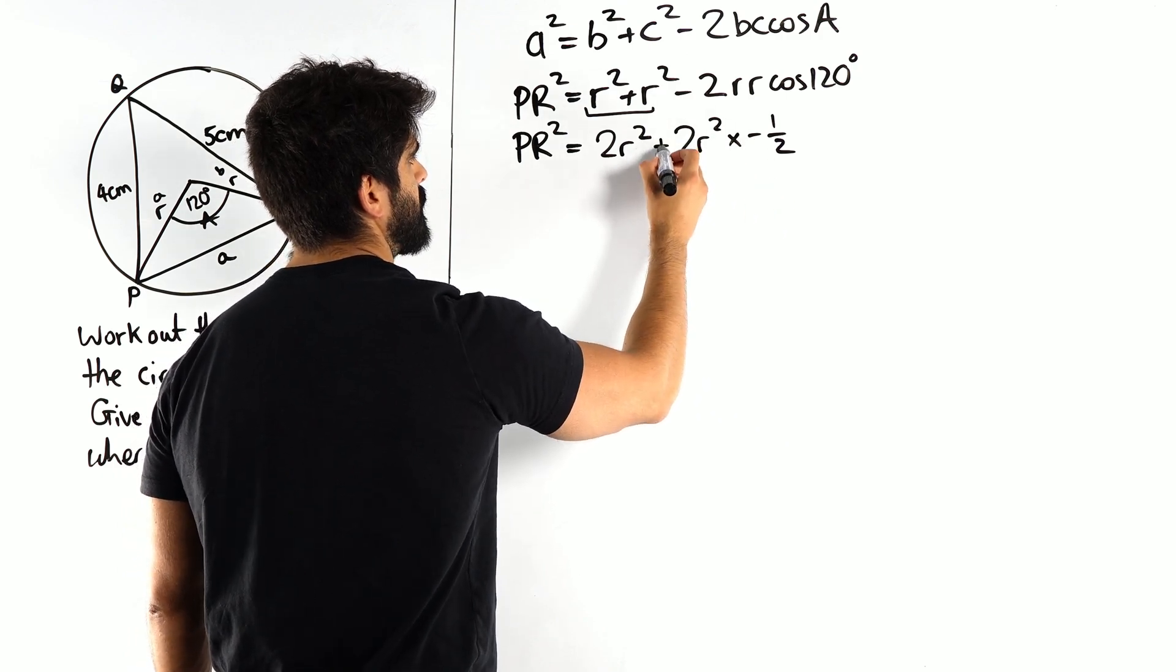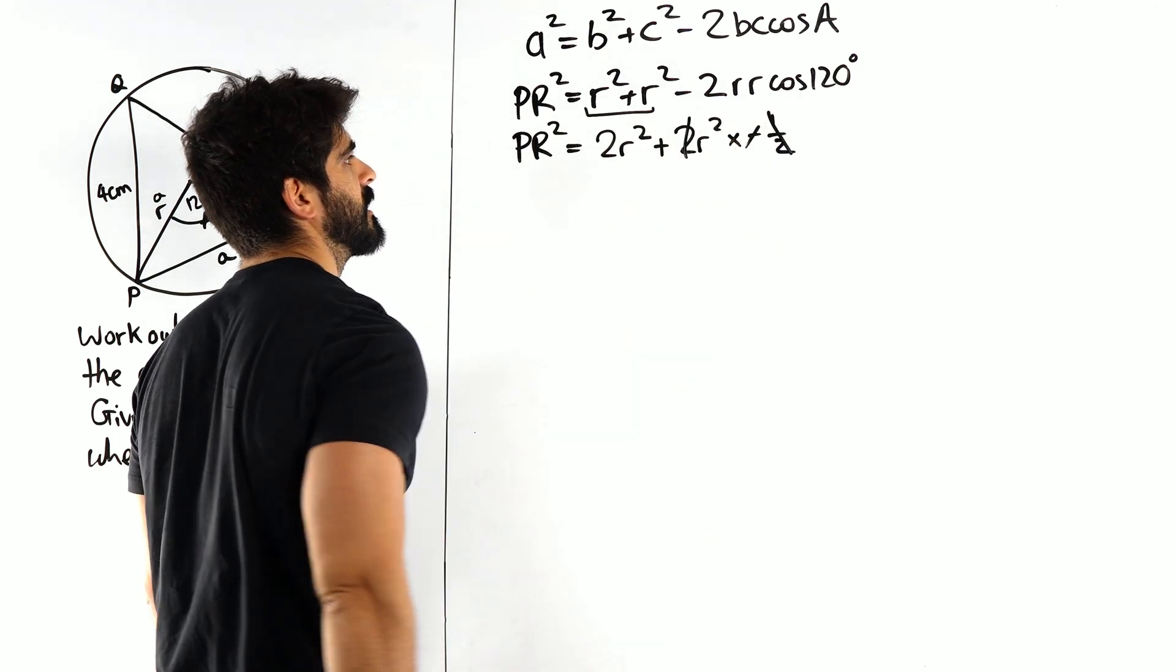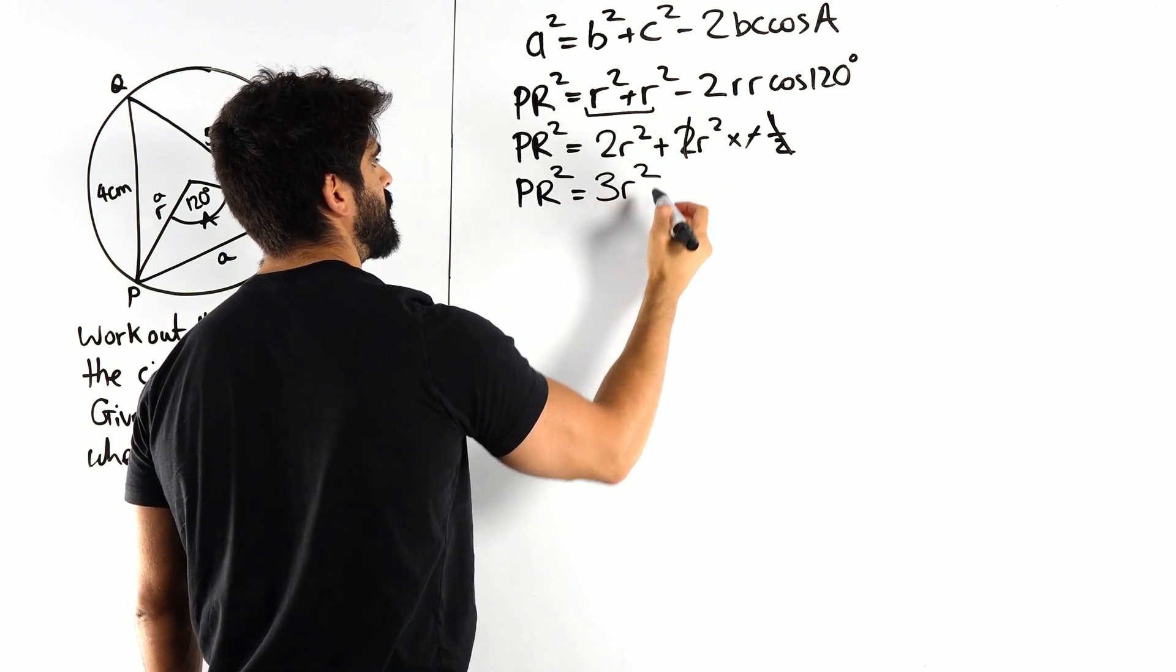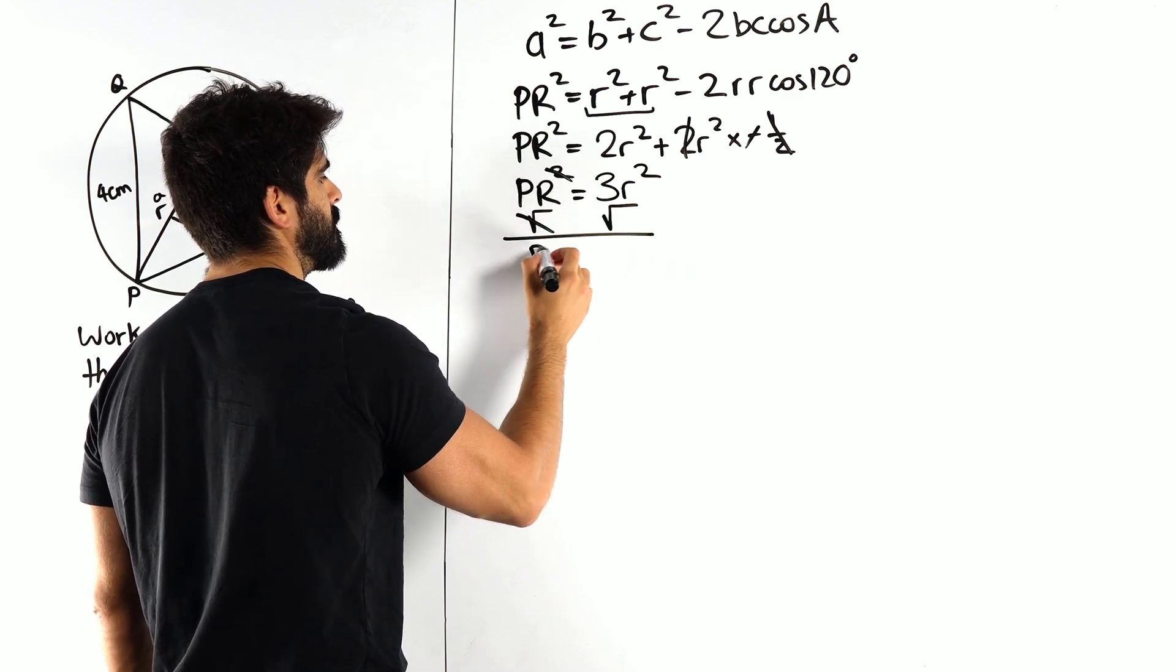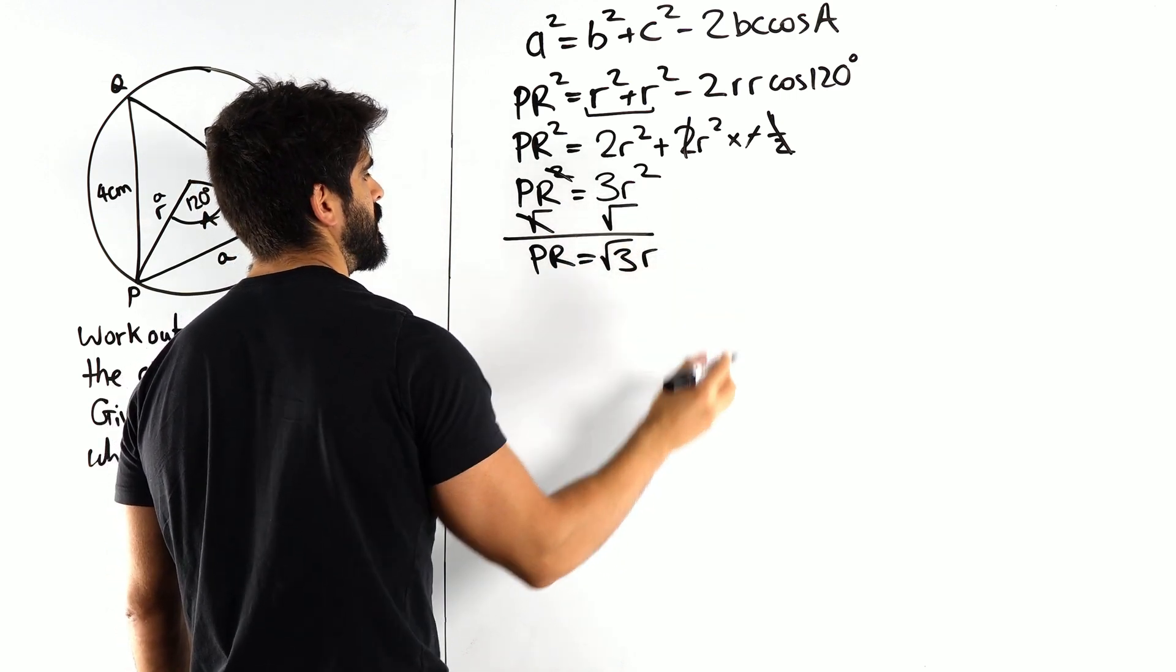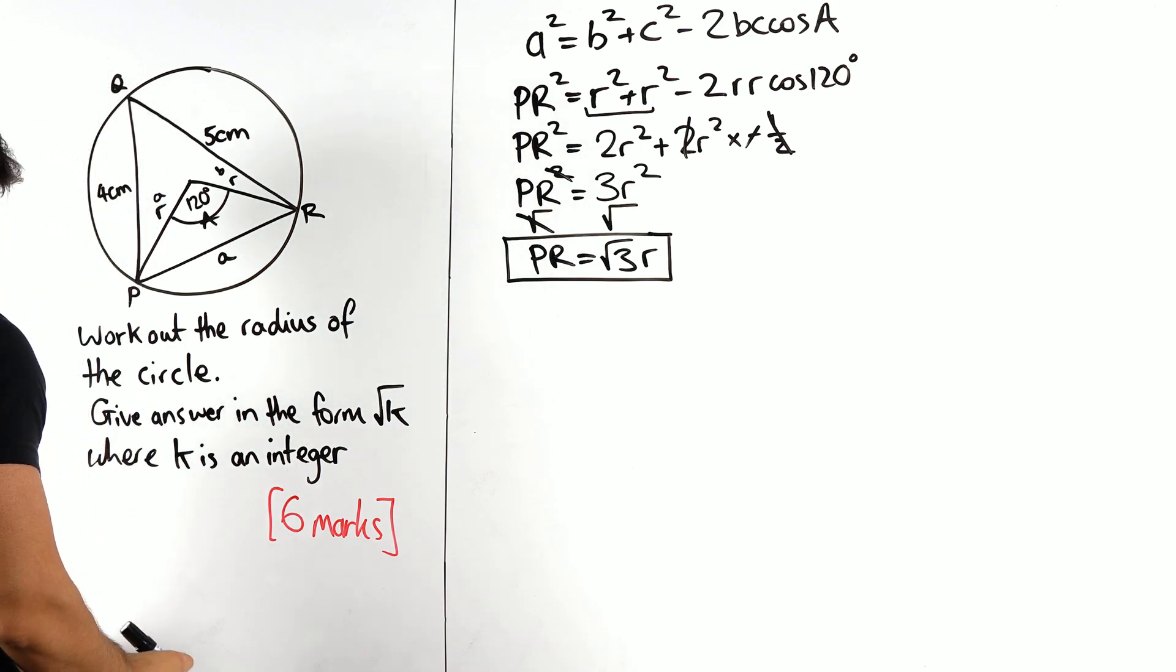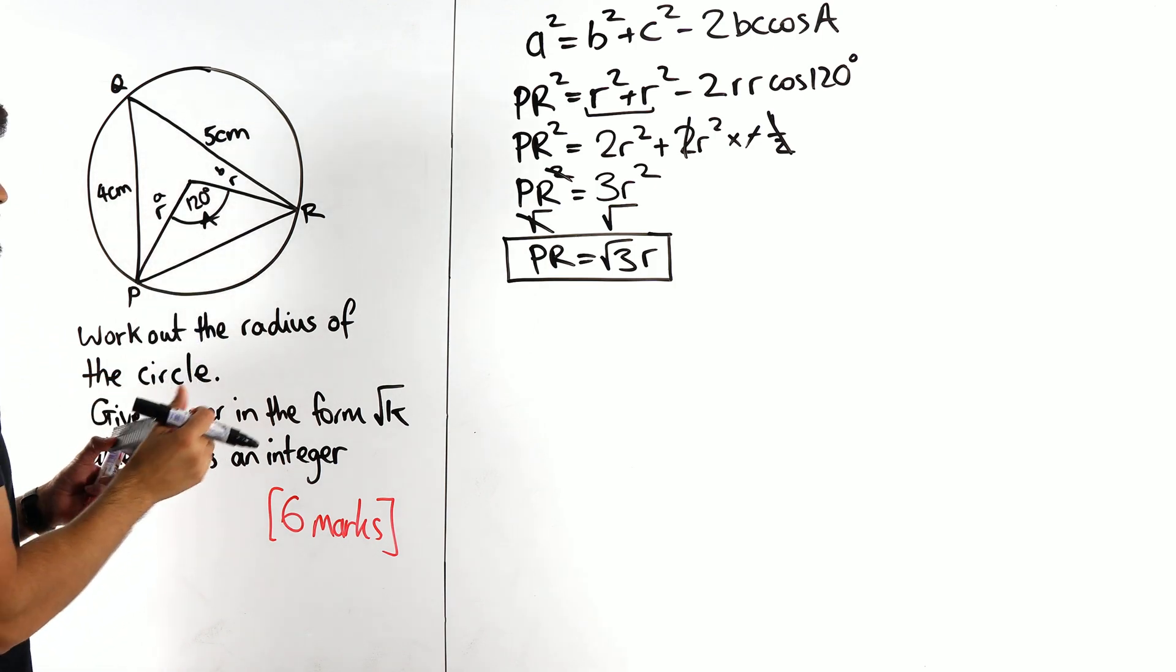So we have PR squared is 2r squared minus another 2r squared times minus a half. The two negatives cancel to make plus, and a half of 2 cancels. So we're left with PR squared is 2r squared plus r squared, which is 3r squared. Then we root both sides to get PR is root 3r.